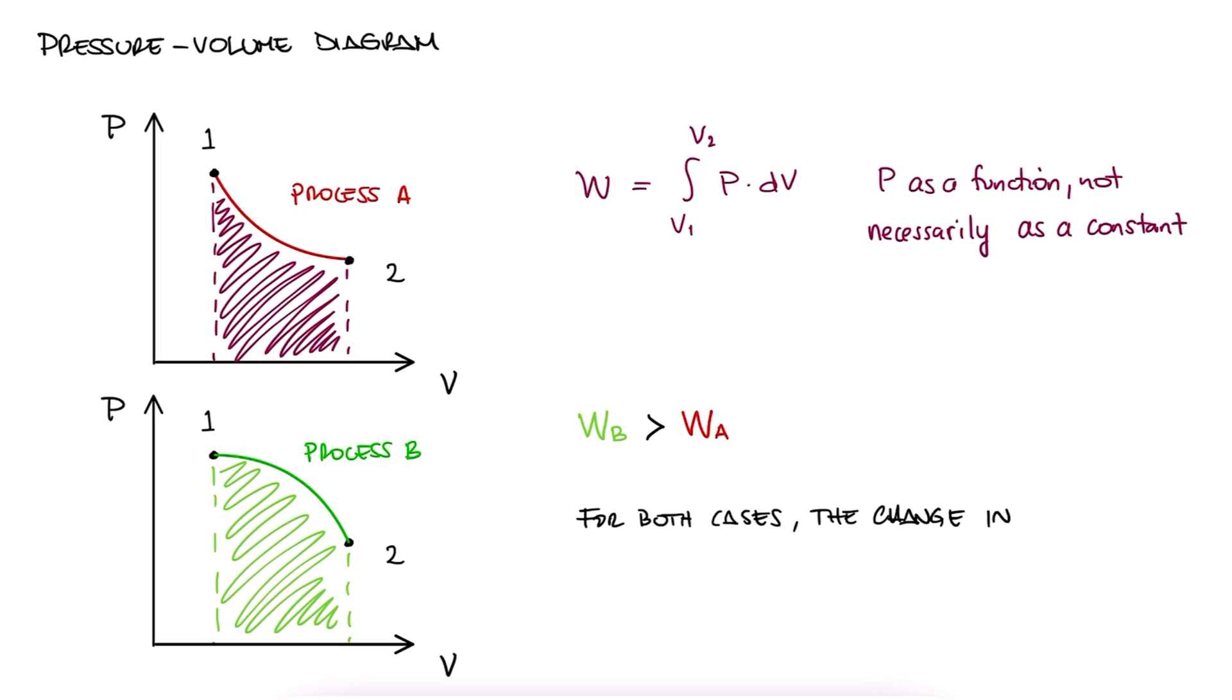Notice that the change in volume or the change in pressure are not path dependent. The change in volume, for example, is the integral of dv from 1 to 2, meaning that the change of volume for process A is the same as the change of volume for process B. This is why we use dv instead of delta v.